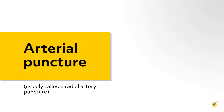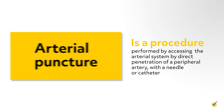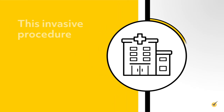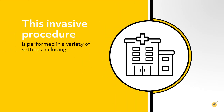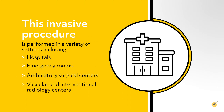To begin, let's review what an arterial puncture actually is. An arterial puncture, usually called a radial artery puncture, is a procedure performed by accessing the arterial system by direct penetration of a peripheral artery with a needle or catheter. This invasive procedure is performed in a variety of settings including hospitals, emergency rooms, ambulatory surgical centers, as well as vascular and interventional radiology centers.